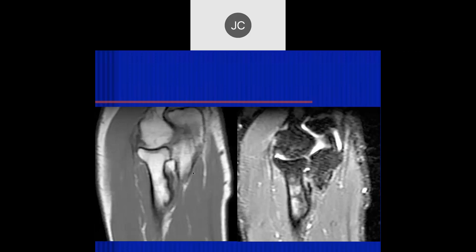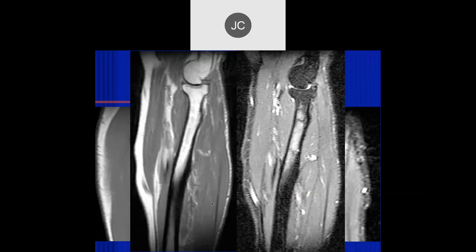Looking at the radius, there appears to be some increased signal proximally. On the T1 it looks pretty normal. Looking at the sagittal images, there's still increased signal there - but it's not in an area where I would expect failure of fat saturation, so I think the increased signal is real.